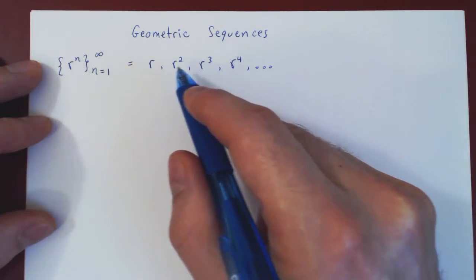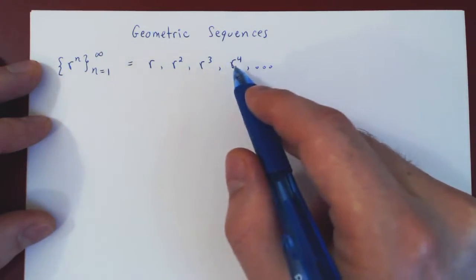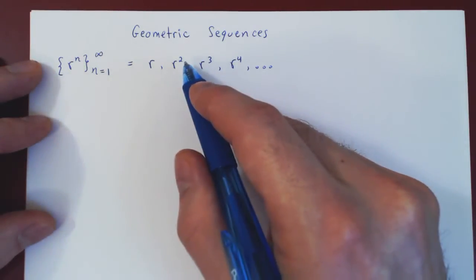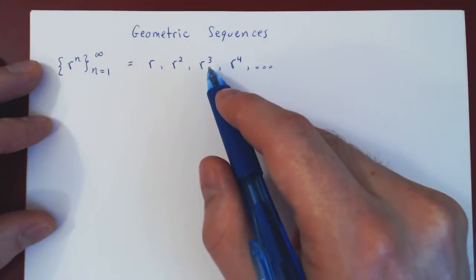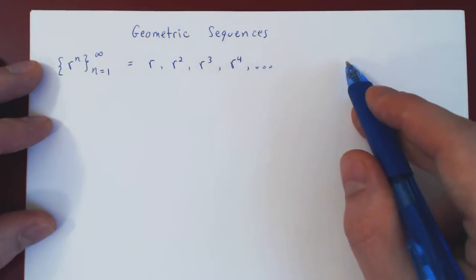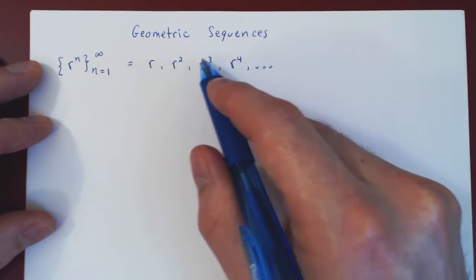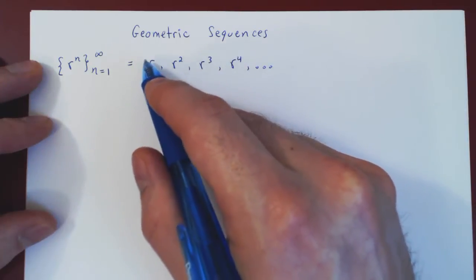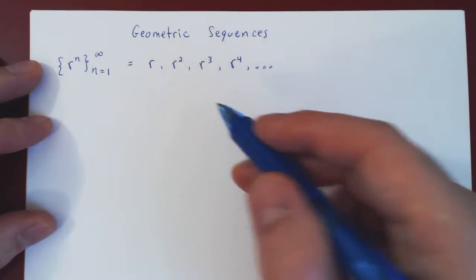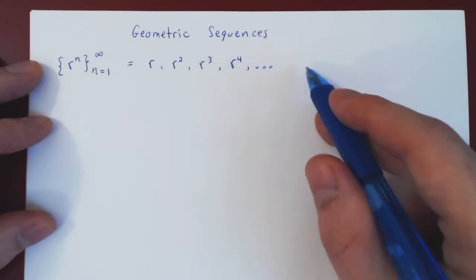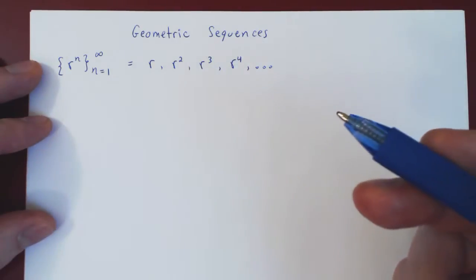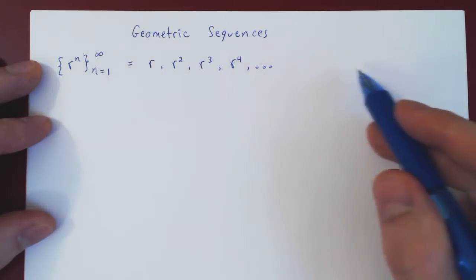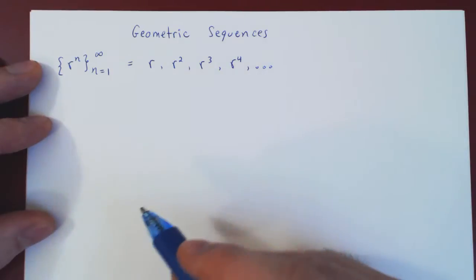If you read the first few terms of the geometric sequence, you get r to the 1, then r squared, then r cubed, then r to the 4, and so forth. So we take larger and larger positive powers of the fixed real number r, and as always, when we consider a sequence, we're asking will, as n goes to infinity, will the sequence converge or diverge?